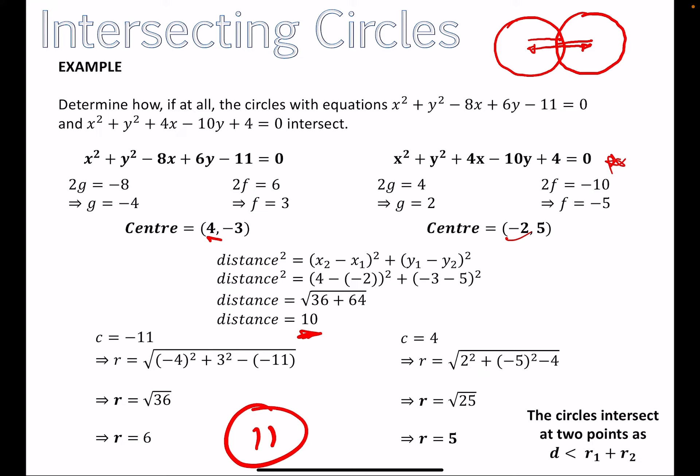So the approach is: find the centers, find the distance between them, find the sum of the two radii, then try drawing a rough diagram to visualize what's happening. If the sum of the radii is bigger than the distance between centers they overlap; if it's less they don't touch. This final step is only worth one or two marks — most marks come from the earlier working — so make an educated judgment and you should be fine.